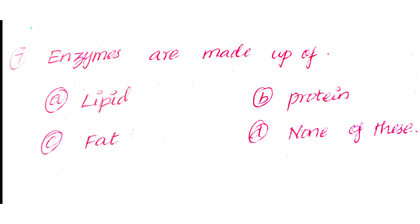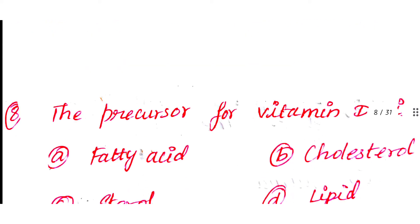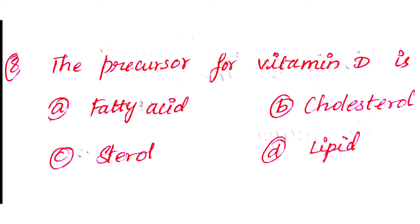Question number 8: The precursor for vitamin D is. Option A: Fatty acid. Option B: Cholesterol. Option C: Sterol. Option D: Lipid. The answer is Option B: Cholesterol.